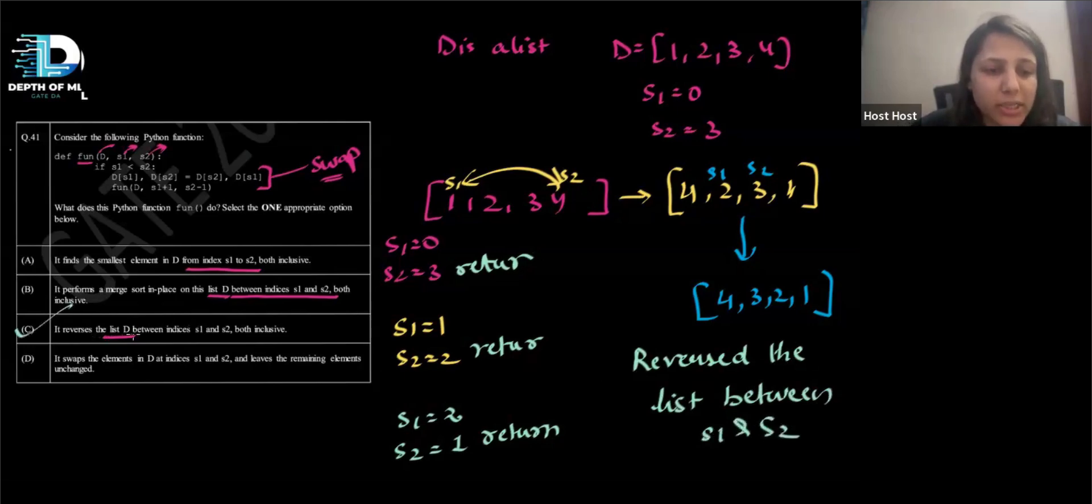So this is my answer. It reverses the list D between indices S1 and S2, both inclusive. Because it is actually making changes on the index itself. Because I had taken 0 and 3, all of these are changed and they are inclusive. So this is the answer.